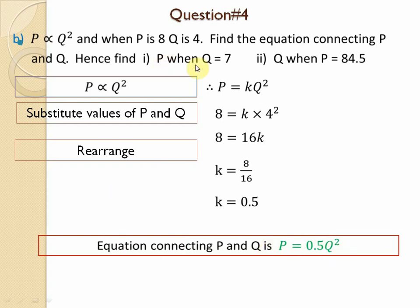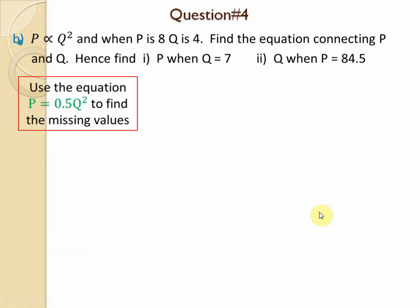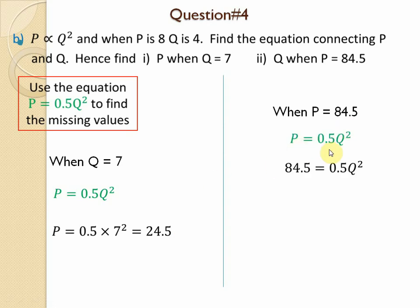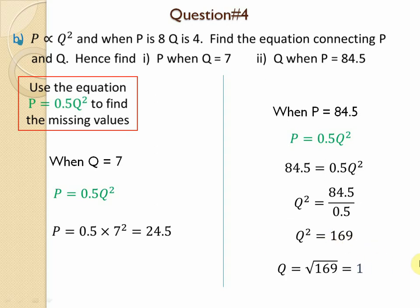Using p = 0.5q² for the two parts: first part — find p when q = 7. So p = 0.5 × 7² = 0.5 × 49 = 24.5. Second part — when p = 84, substitute: 84 ÷ 0.5 = 168; wait, 169 square root is 13. So q = 13.